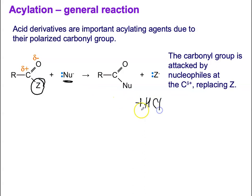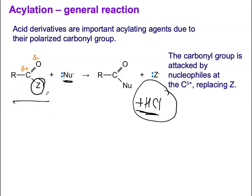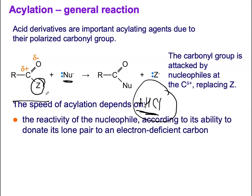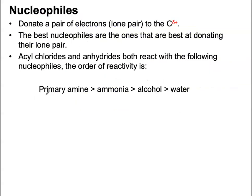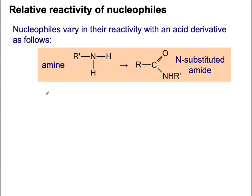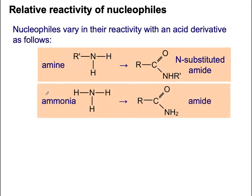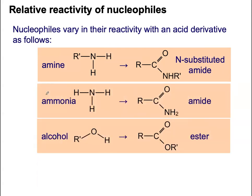The reaction is vigorous and the other product is HCl, giving off misty white fumes — a really nasty reaction. Acyl chlorides hydrolyse in water very quickly, which is why they would not be used in a typical lab situation. In terms of nucleophile strength, primary amines are the best nucleophile, then ammonia, then alcohol, and then water.